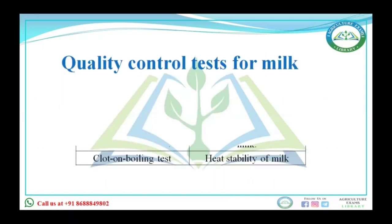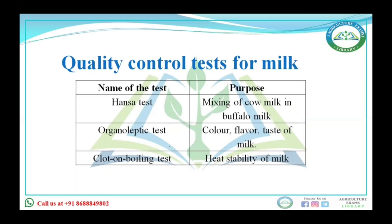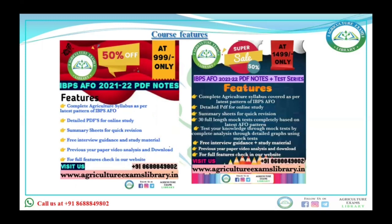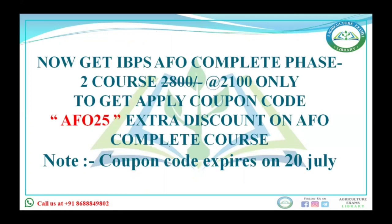For quality control tests: the Hansa test is done to detect mixing of cow milk with buffalo milk. The organoleptic test is done to assess color, flavor, and taste of milk. The clot on boiling test is done to check the heat stability of milk. In the next lecture we will study about milk and milk products. Thank you, see you in the next lecture.